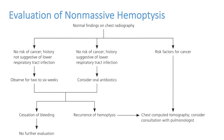The evaluation of hemoptysis is done by classifying it as non-massive or massive. For non-massive hemoptysis: if chest X-ray is normal with no cancer risk, observe the patient. If there is history suggestive of lower respiratory tract infection, treat with antibiotics. If there are risk factors for cancer, proceed to CT scan.